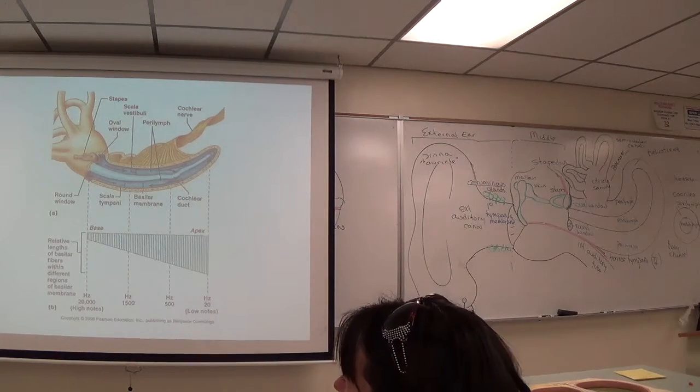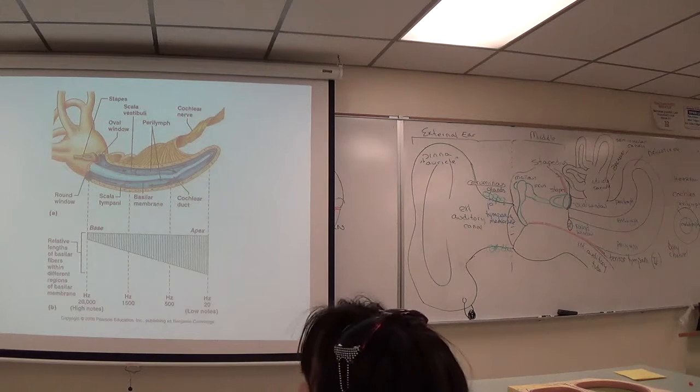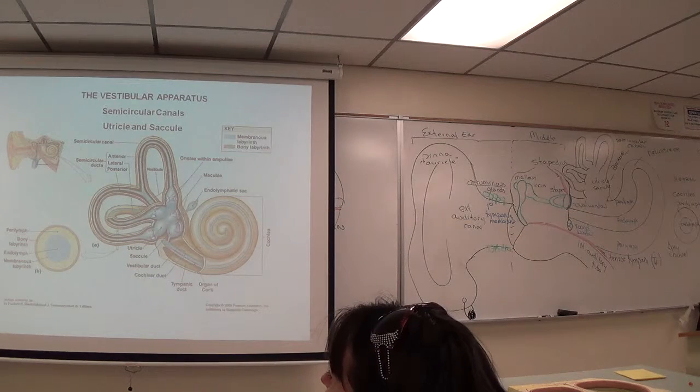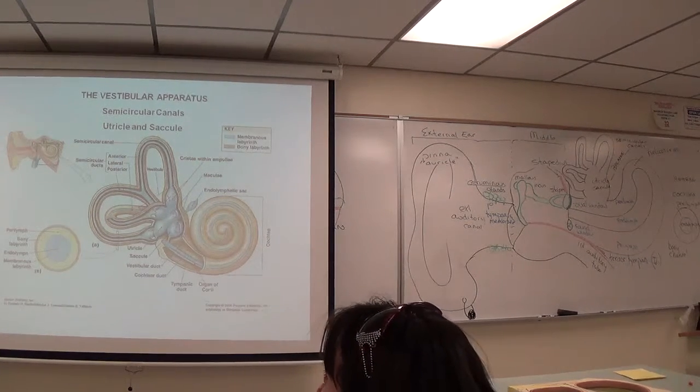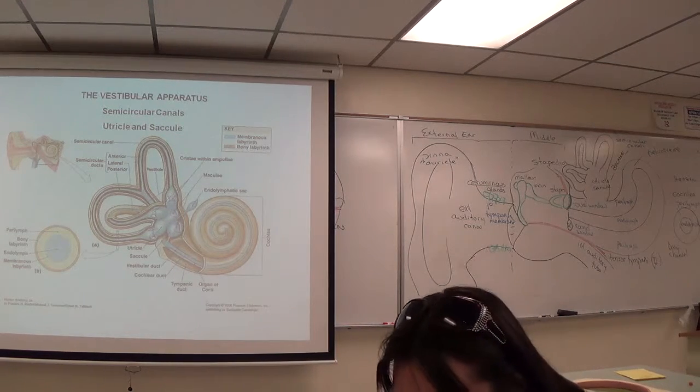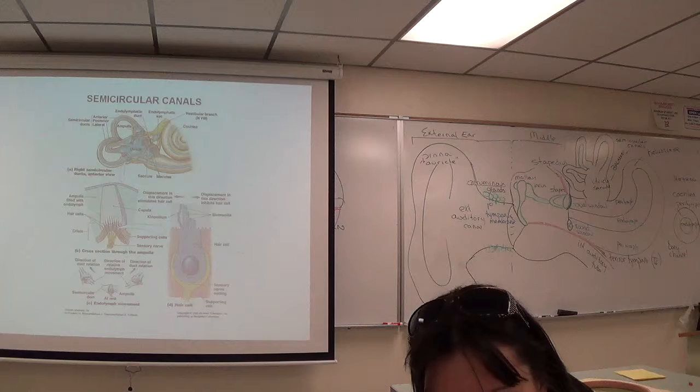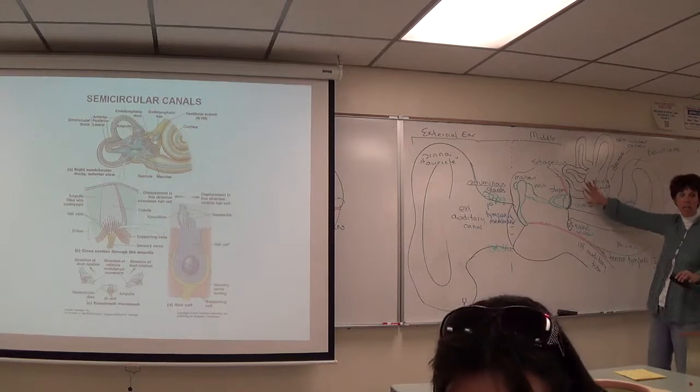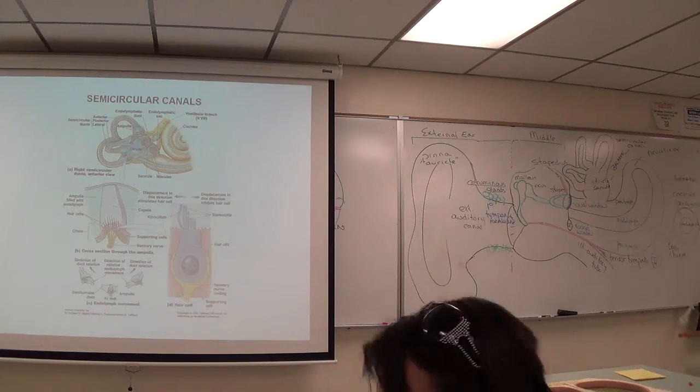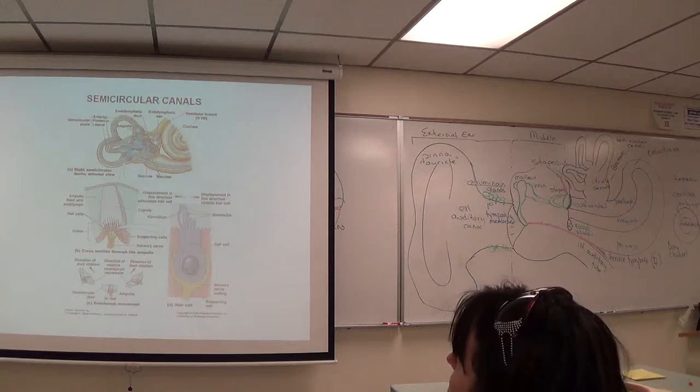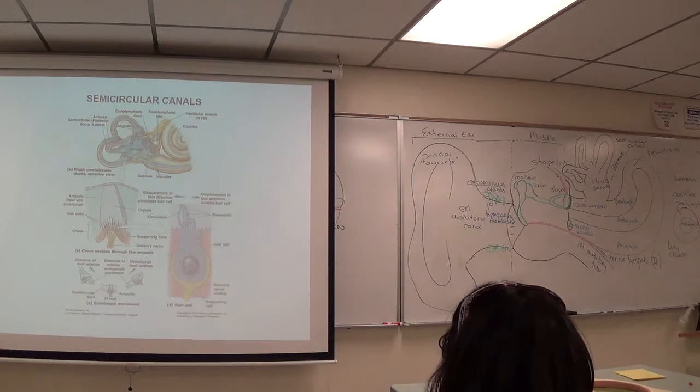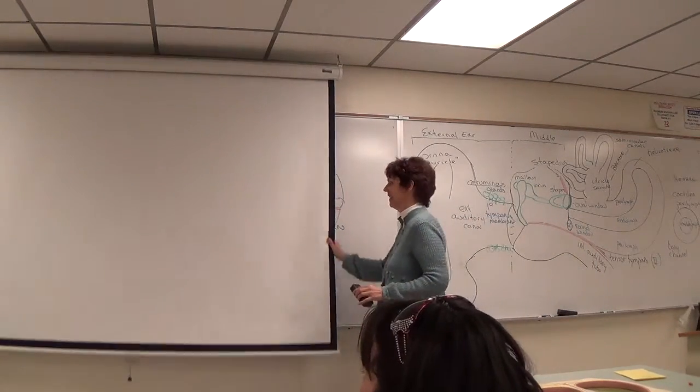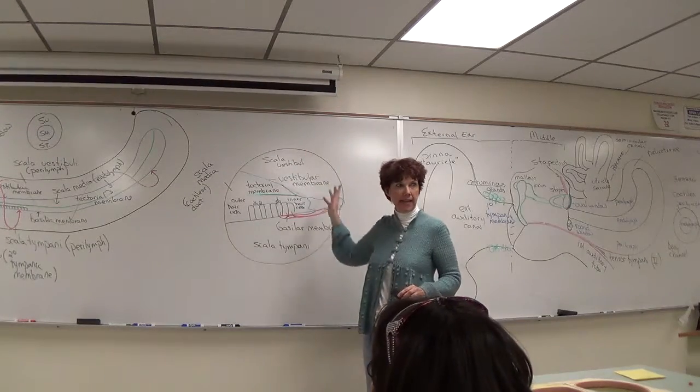Now let's look at the vestibular apparatus, which is the semicircular canal, the utricle, and the saccule. So let's look at the semicircular canal, and I'm going to turn off the light again and redraw this area right here. So may I erase this? Do you guys have this already?